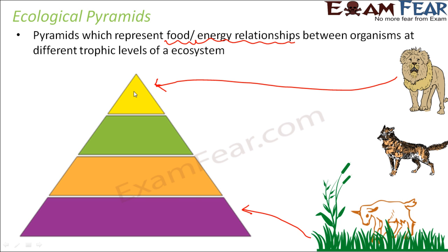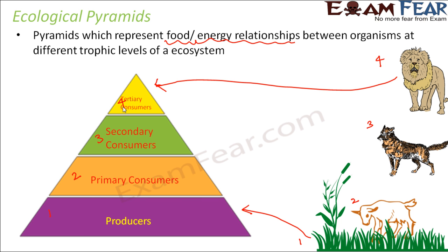Depending on the number of levels in the food chain, the pyramid will also have that many layers. For example, with four trophic levels you have four layers: producers, primary consumers, secondary consumers, and tertiary consumers. Ecological pyramids can be three, four, or five steps long, but shorter food chains are preferred because energy reduces greatly at higher trophic levels.